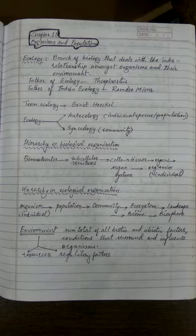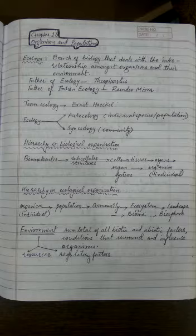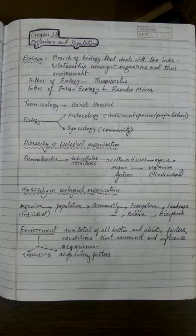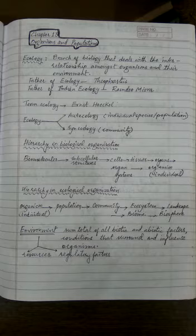We learned that there is a hierarchy in biological organization. Biomolecules join to form subcellular structures, which join to form cells. Cells of similar or different types join to form tissues, tissues join to form organs, organs join to form organ systems, and all the organ systems together give rise to an individual organism.